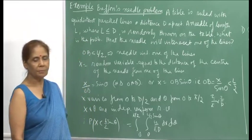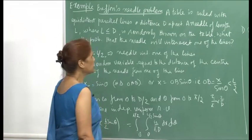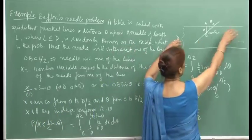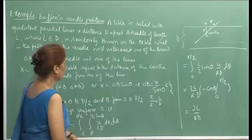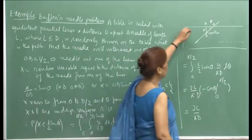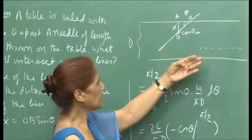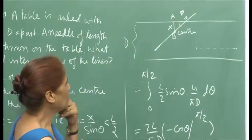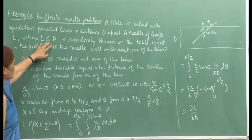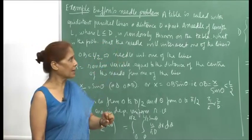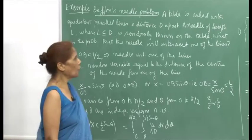An interesting example is the Buffon's needle problem. Buffon was a French naturalist who formulated this problem. A table has parallel lines drawn on it, with distance d between consecutive lines. A needle of length L (where L ≤ d) is randomly thrown on the table. We need to find the probability that the needle will intersect one of the lines.